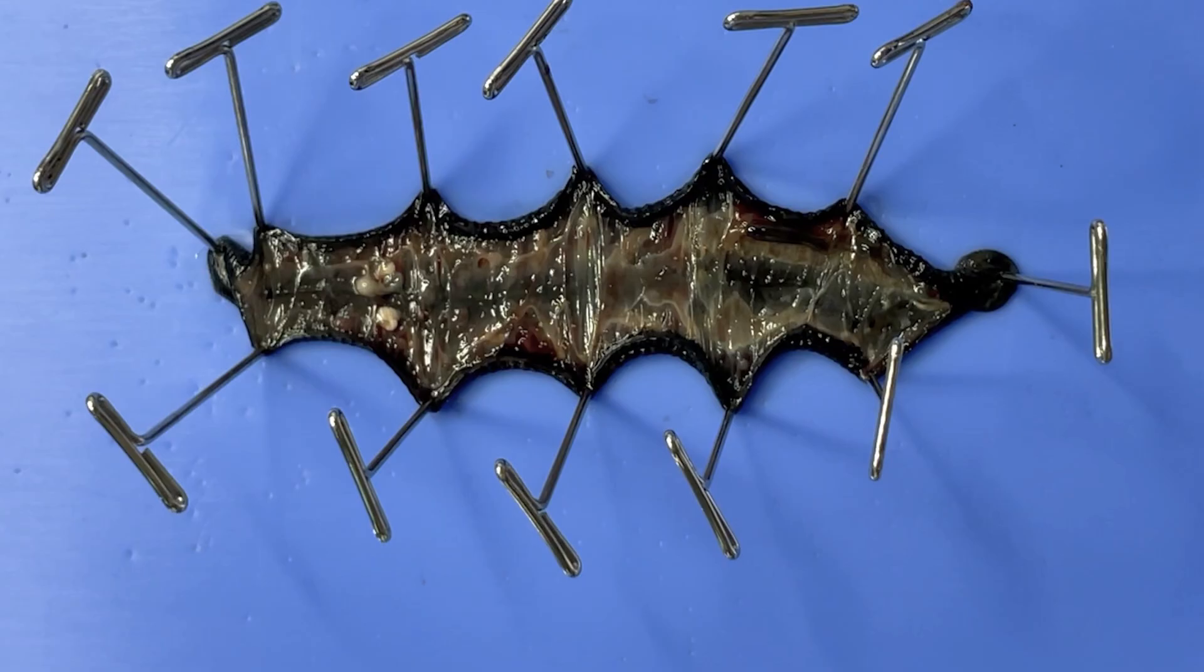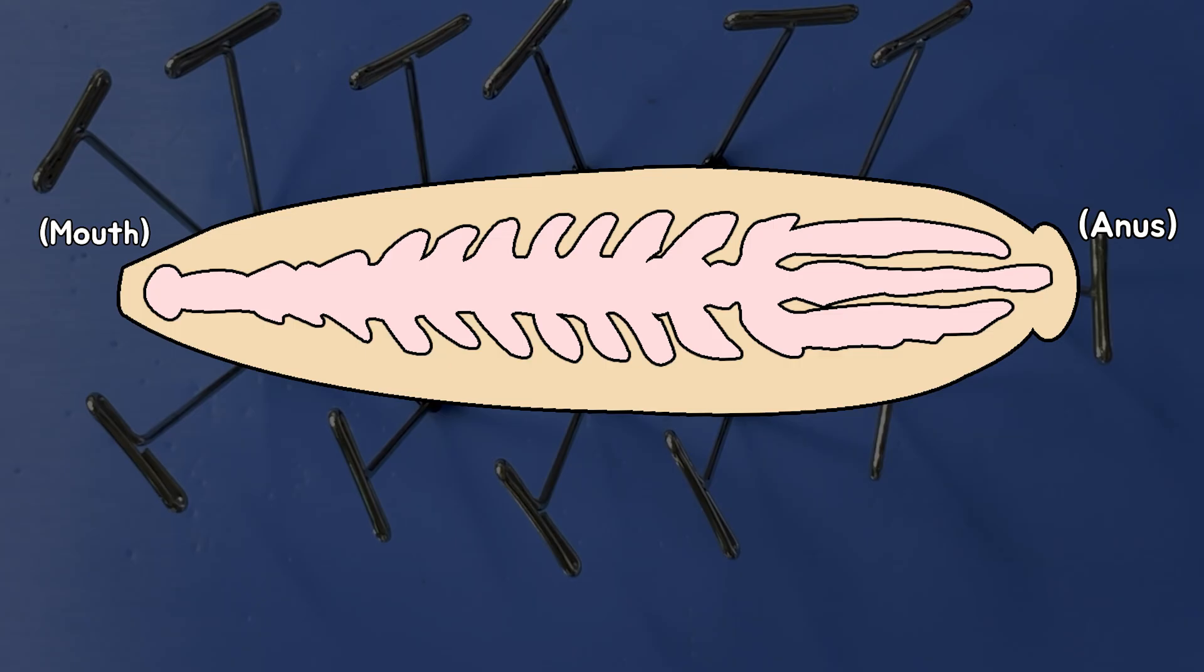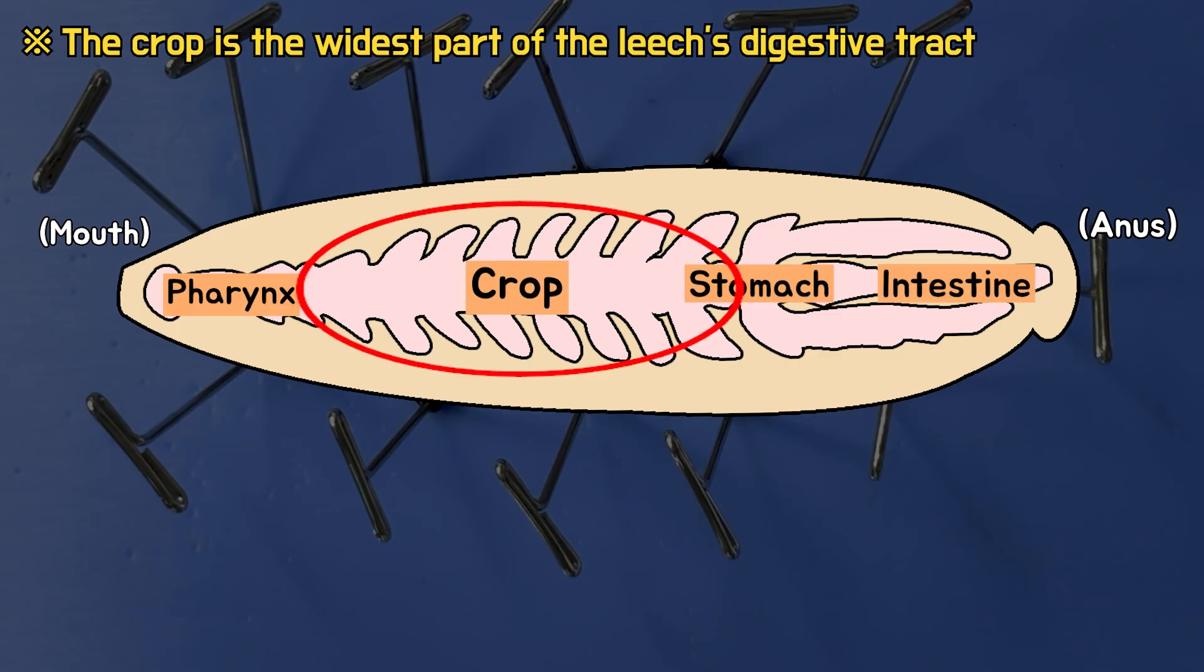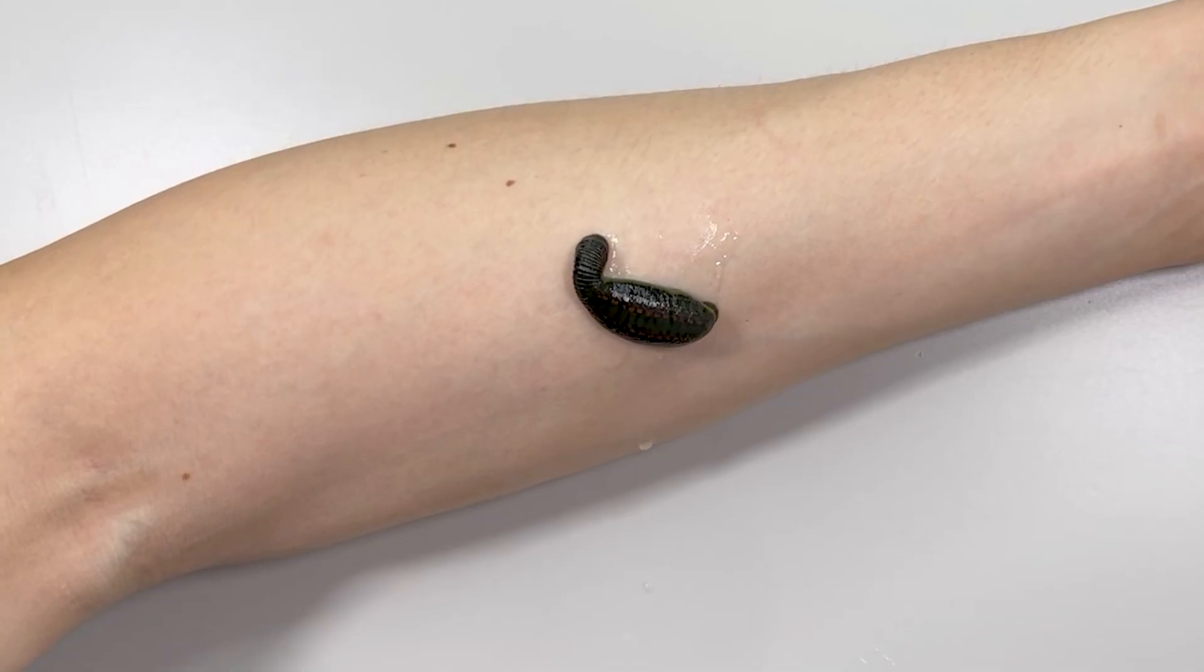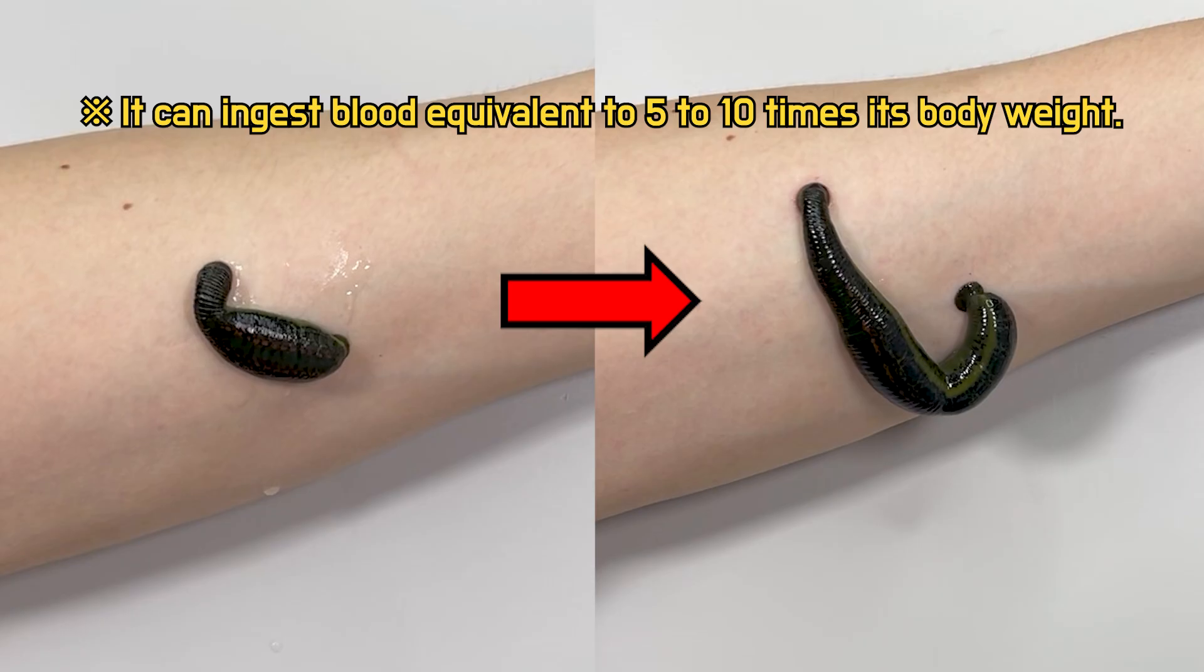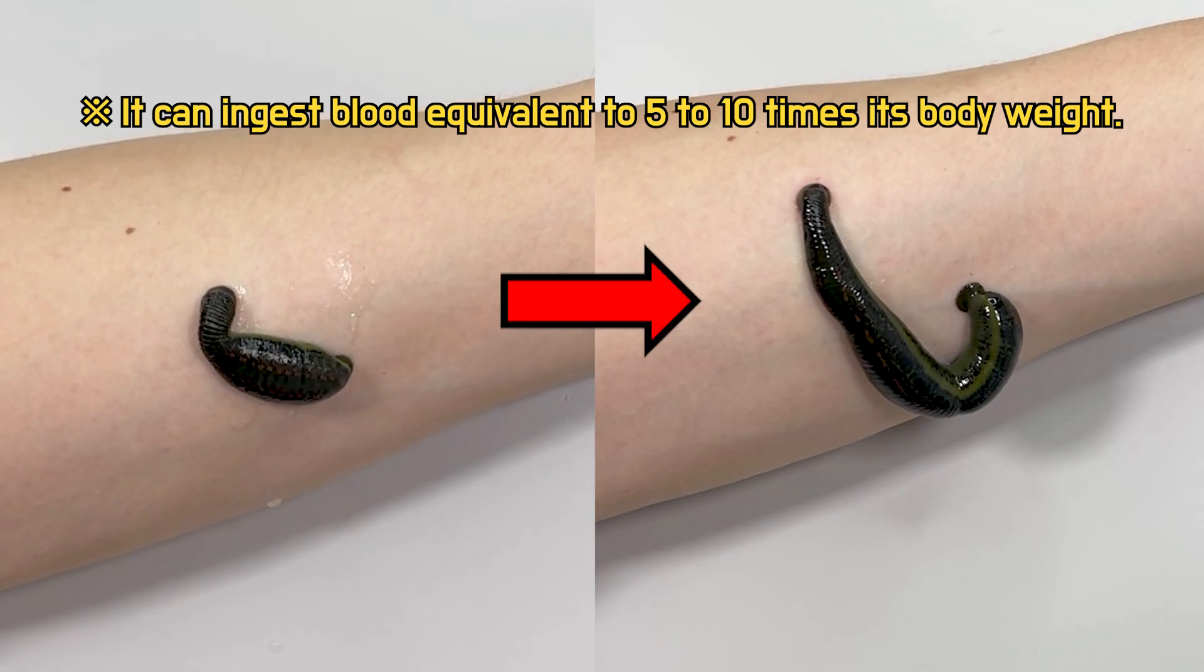Next, their digestive tract runs straight from the mouth to the anus. The crop is the part where food is temporarily stored. The leech's crop has great elasticity, allowing it to consume a large amount of blood at once.